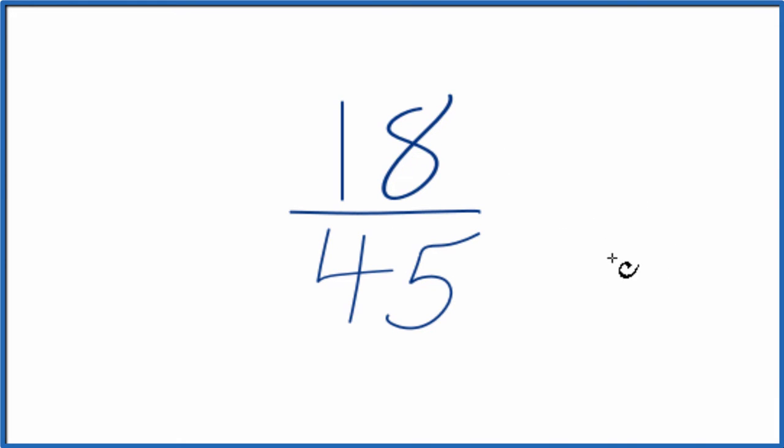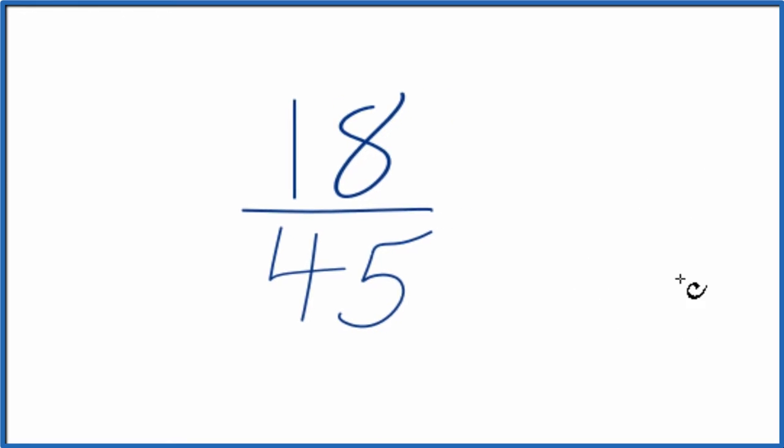To do that, we need to find a common factor, something that goes into 18 and 45. So these are the factors for 18 and 45.